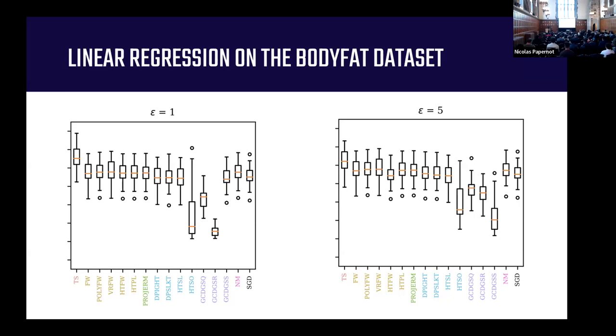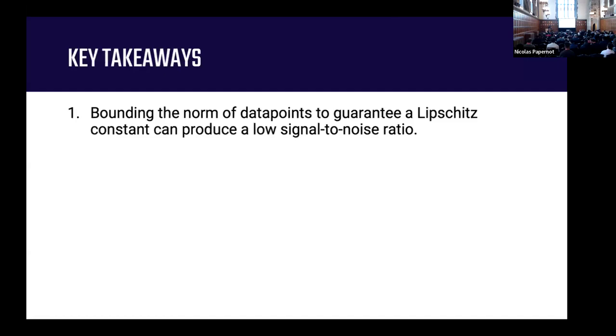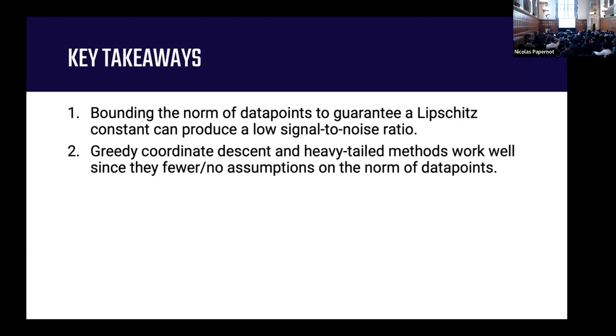Now I'm optimizing. I'm adding noise proportional to the norm of the dataset, which is now restricted, but most of my data points are near the zero vector. This is one of the main takeaways from this study: that bounding the norm of data points to guarantee a Lipschitz constant in order to do optimization can produce a low signal-to-noise ratio. Greedy coordinate descent and heavy-tailed methods work well since they require either fewer or no assumptions on the norm of datasets. This is something that's important and something I've been thinking about more recently—that differentially private algorithms really require us to be smart about the way we take our data and put it into an algorithm.